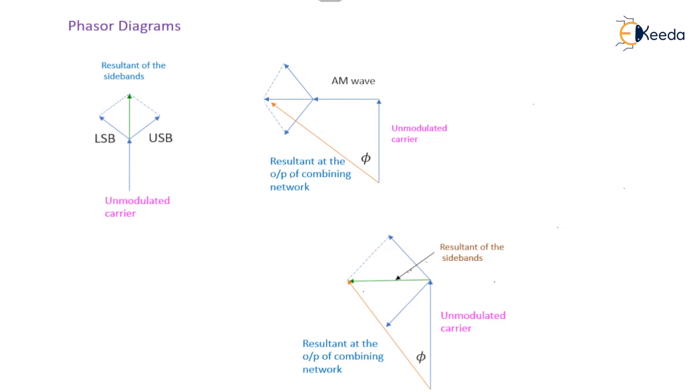That means the modulating signal comprises of the sidebands only. Variation in the amplitude, if the system changes the phase angle, then definitely we can say that frequency modulation takes place. This is all about the indirect method of FM generation, the Armstrong method. Thank you for watching.